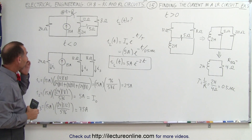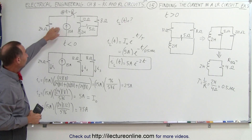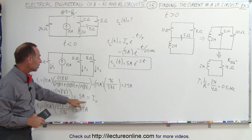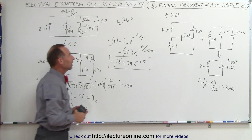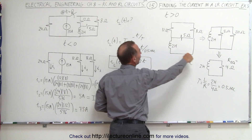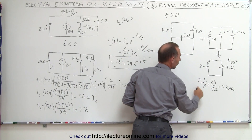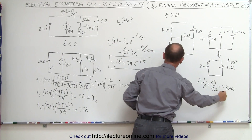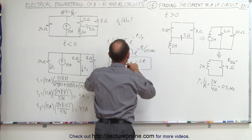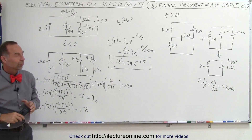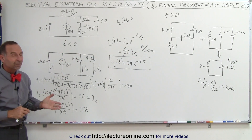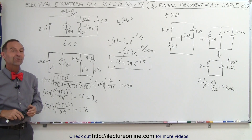To summarize the method: find the equivalent circuit for the initial conditions to get the initial current, then find the equivalent circuit for time greater than zero to solve for the time constant. Plug those two values into the formula, and you end up with the final current through the inductor. And that's how it's done.